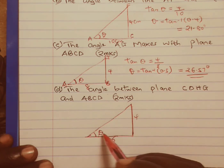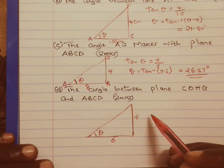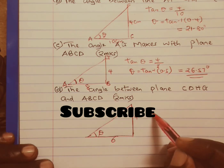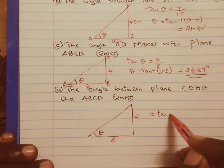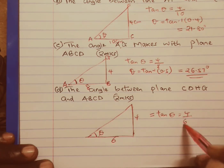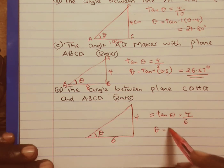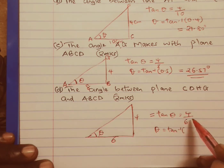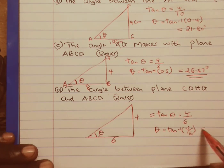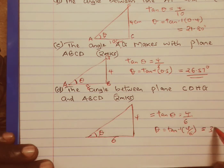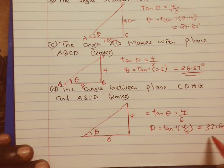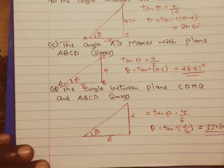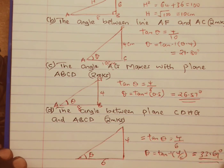To calculate the angle between plane CDHG and plane ABCD, we again use tan since we are given the opposite and the adjacent. Tan theta equals opposite over adjacent, so to get theta we take the tan inverse of 4 out of 6. The tan inverse of this value gives us 33.69 degrees correct to two decimal places, and that is the answer to that question.